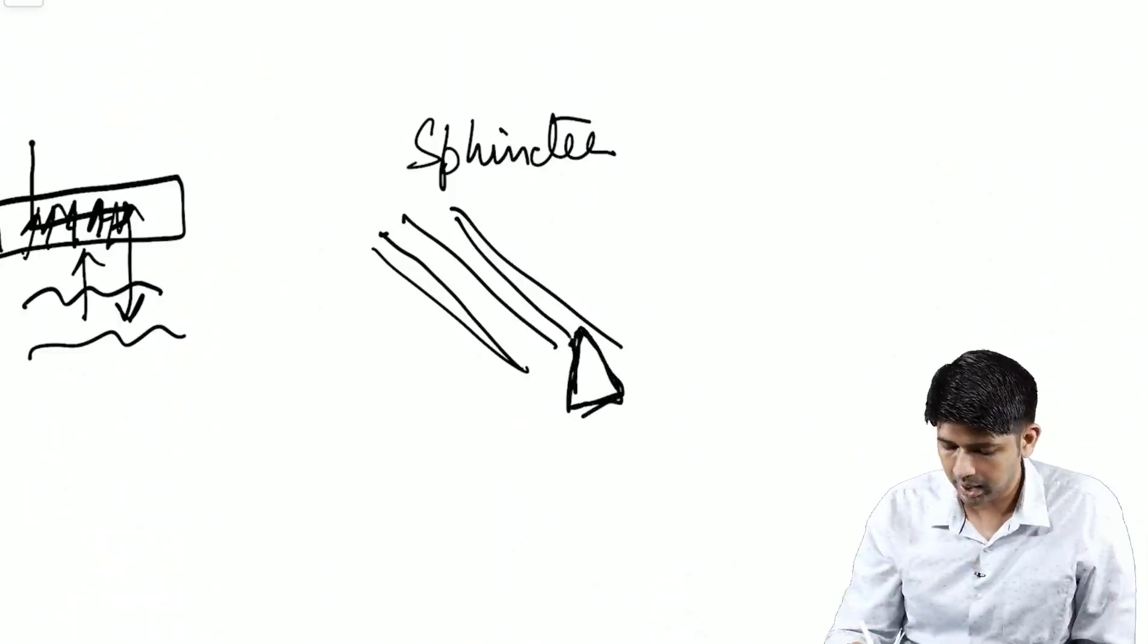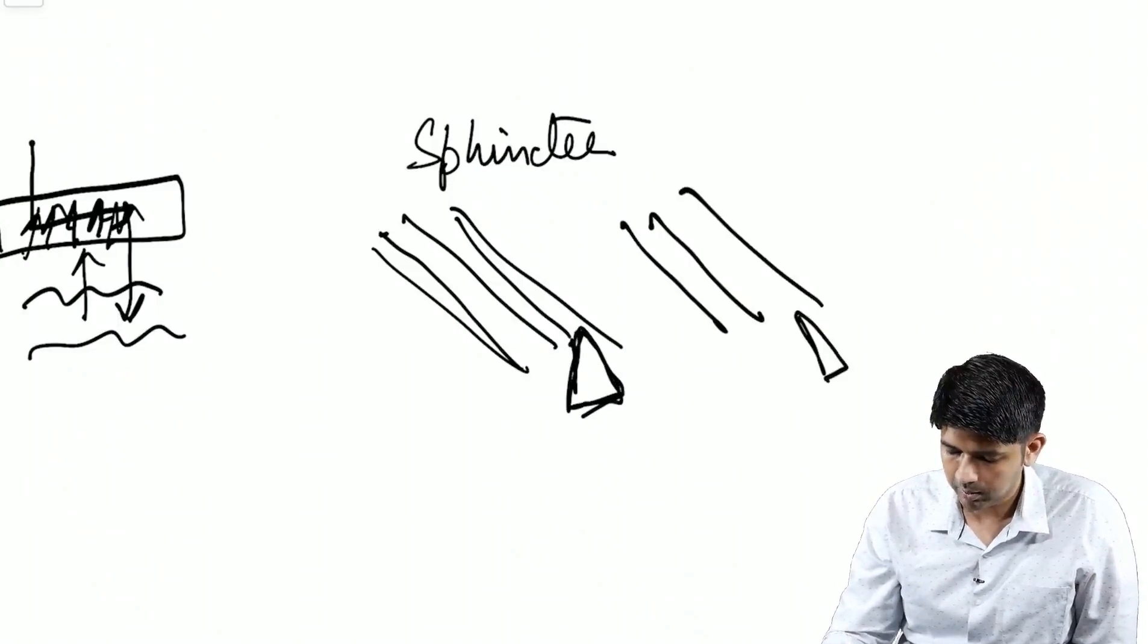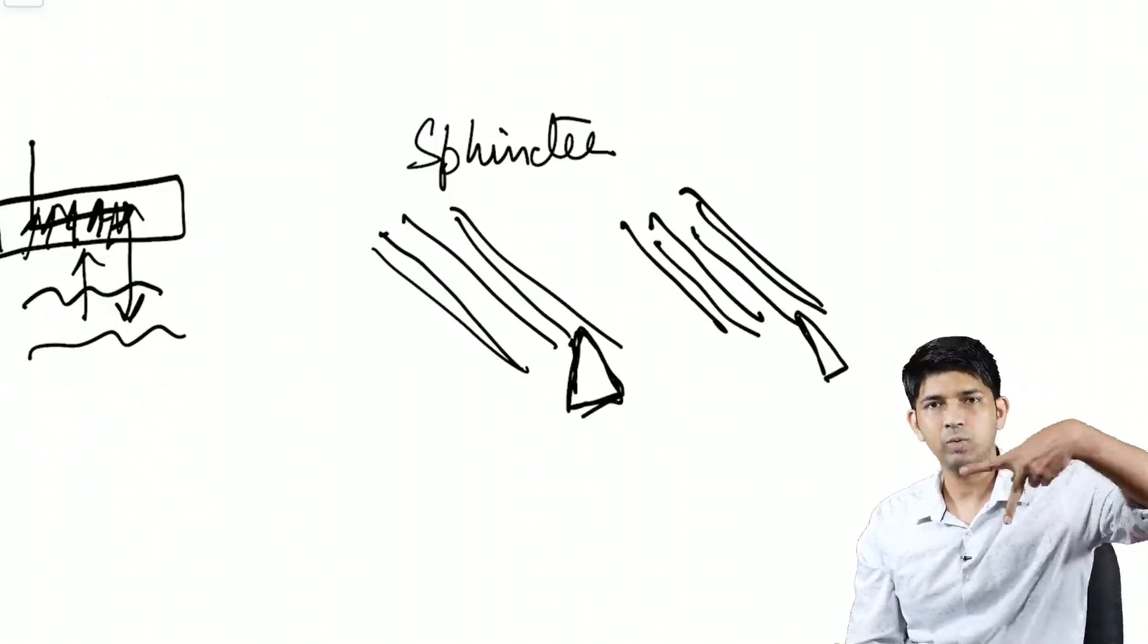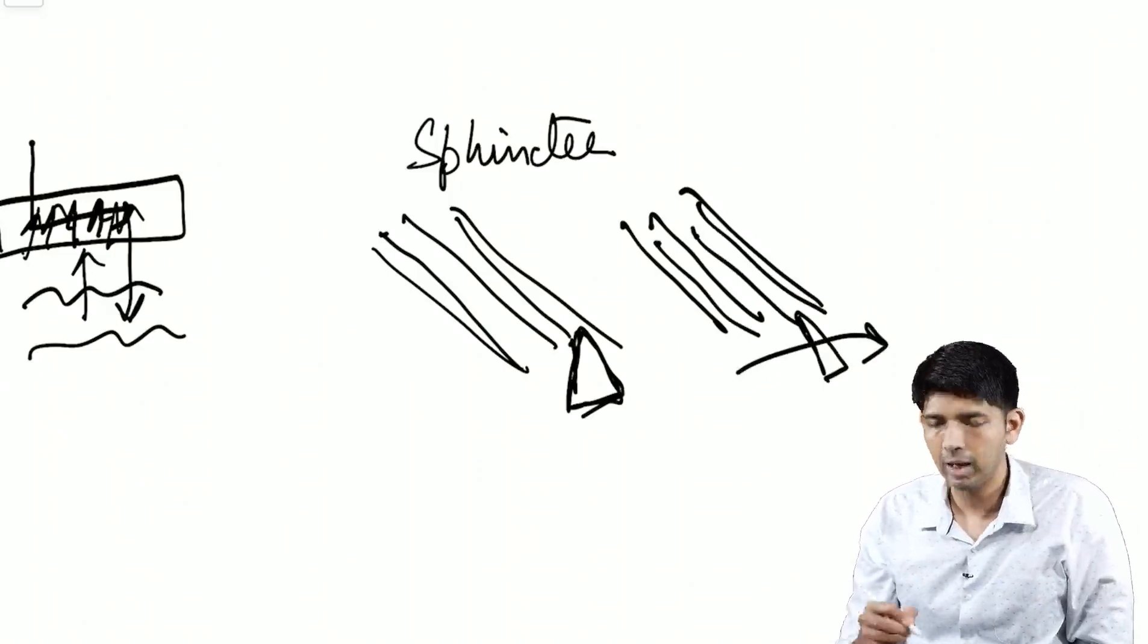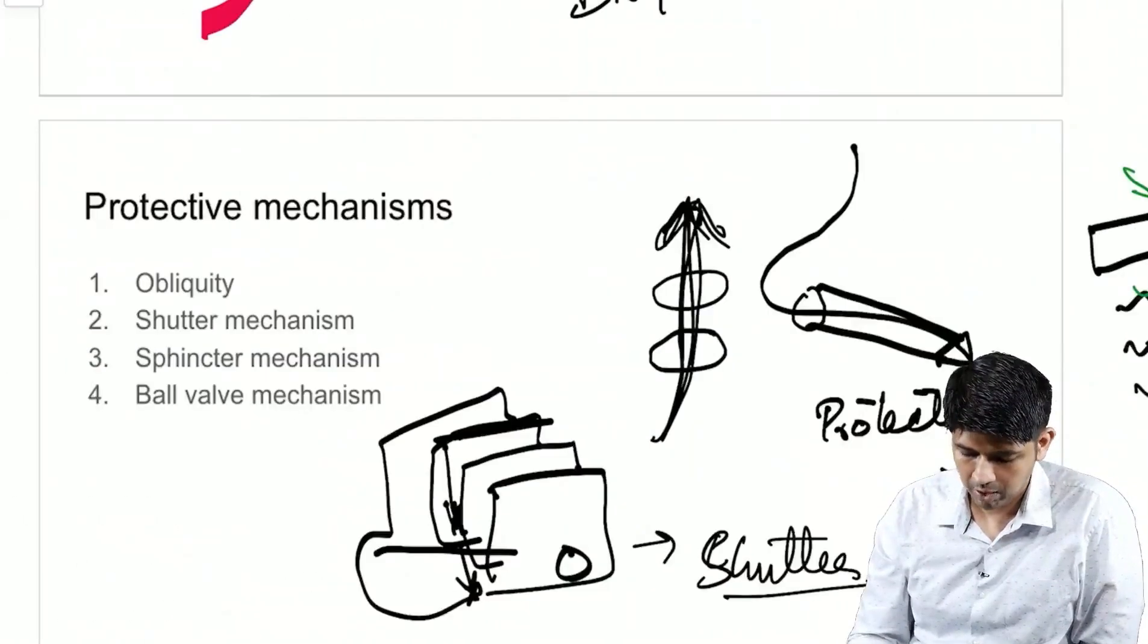So, whenever the external oblique contracts, this opening will become narrow. It acts like a sphincter. What is wide will just close up like this and prevent any content from trying to come out. So that is another protective mechanism which is going to prevent the formation of a hernia.